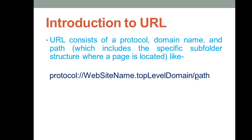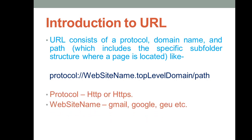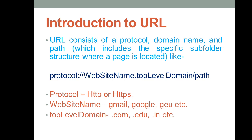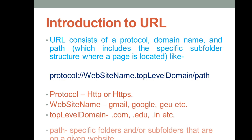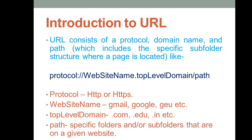Sometimes we also give the path. The protocol is like HTTP; the website name could be Gmail, Google, GEU, Amazon, Flipkart, or GeeksForGeeks. The top-level domain indicates the type — commercial, educational, or academic. For example, GEU uses 'ac.in' where 'ac' means academic and 'in' means India. The path specifies the specific folders where the given website content is located, but in general the three basic terms in a URL are protocol, website name, and top-level domain.